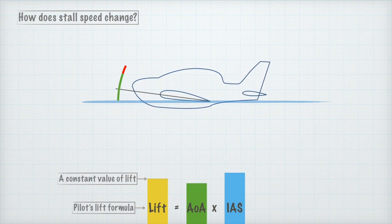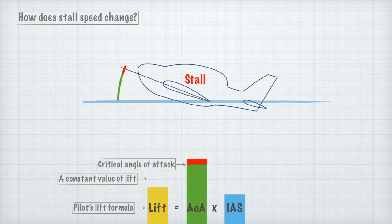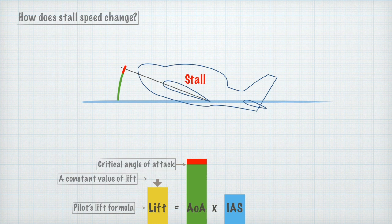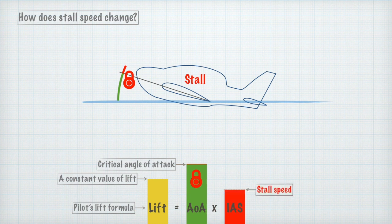When the angle of attack is increased beyond the critical angle of attack, the lift is reduced and the aeroplane is stalled. The aeroplane enters the stall at the critical angle of attack. So if we lock the value for this angle of attack in the lift formula, the airspeed can now be translated into stall speed.